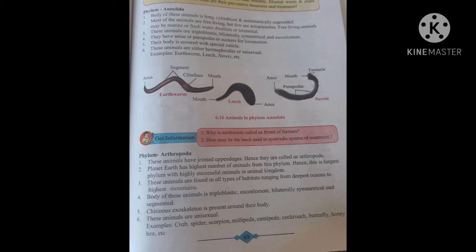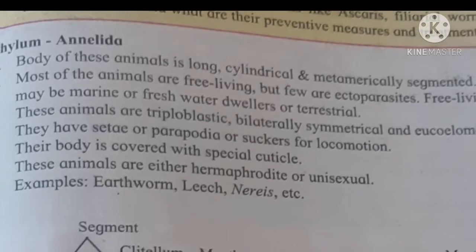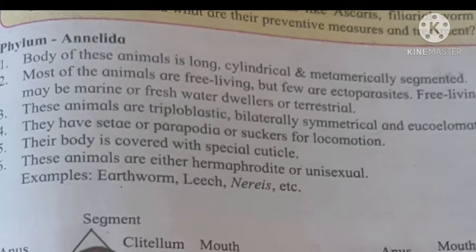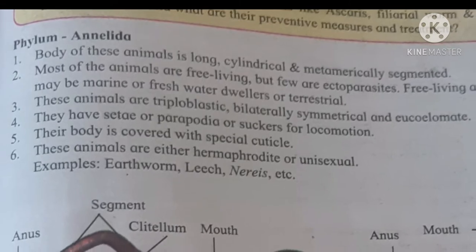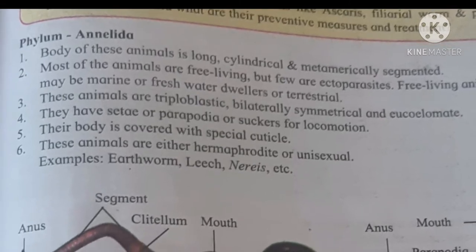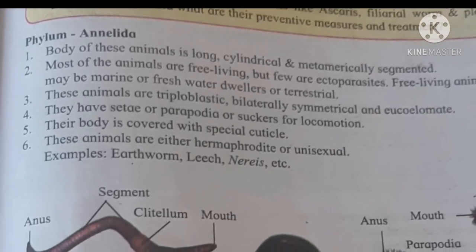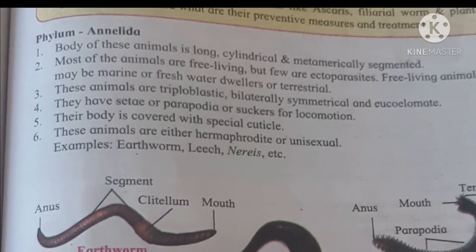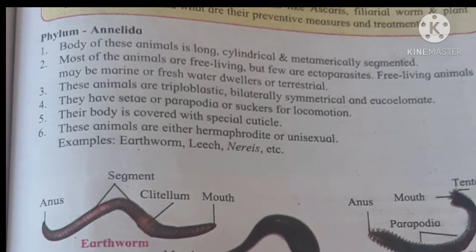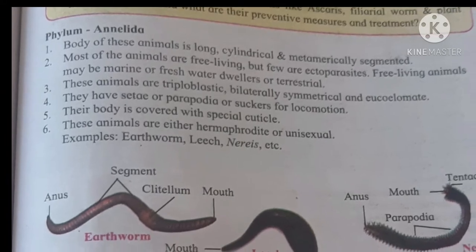Their body is covered with a special cuticle. These are either hermaphrodite or unisexual. For example: earthworm, leech, Nereis, etc.